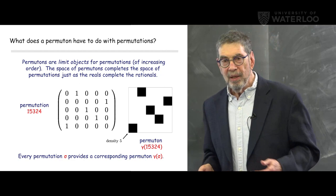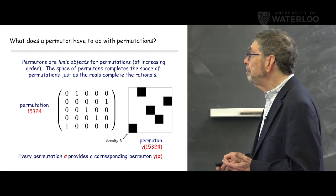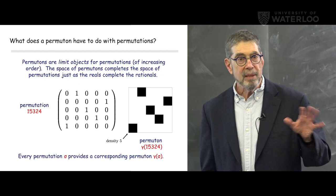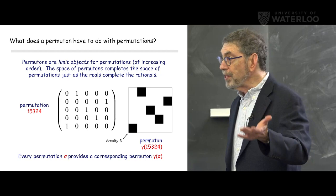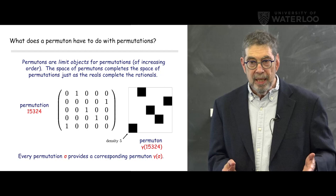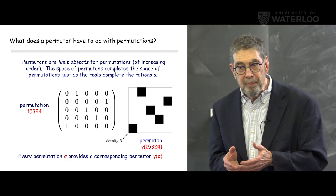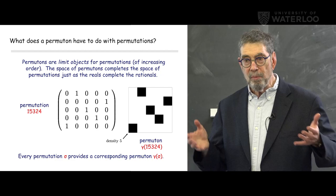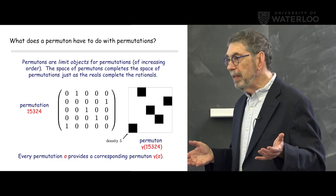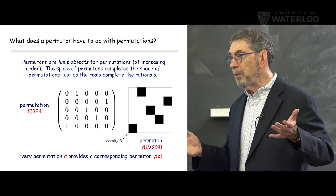What does a permuton have to do with permutations? Permutons are limit objects for permutations. Some of you are familiar with graphons, which are limit objects for dense graphs. Permutons function analogously for permutations. There is a natural topology on the class of all permutations of numbers one through n, for all n. This turns the set of all permutations into a metric space, and the completion of that metric space is exactly the set of all permutons — just as the real numbers complete the rationals.